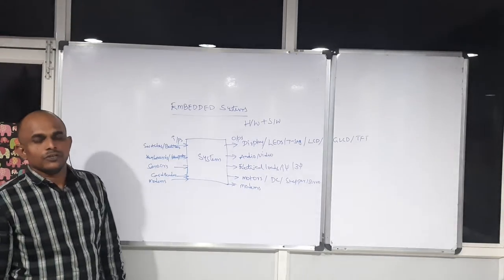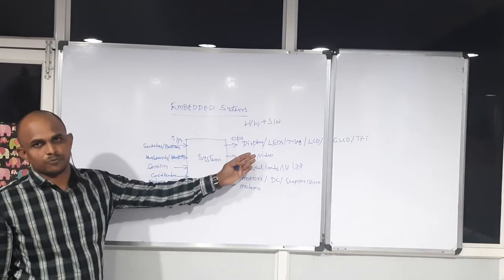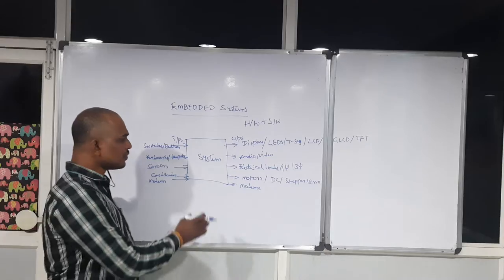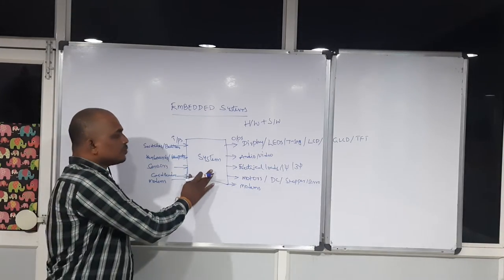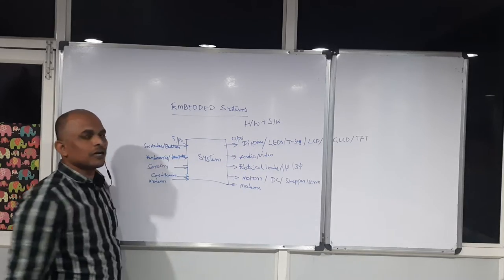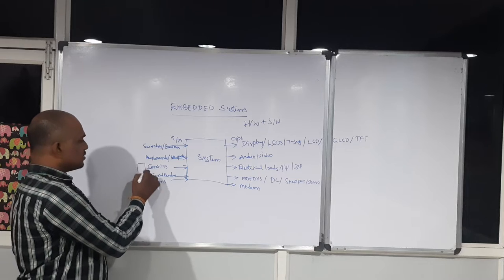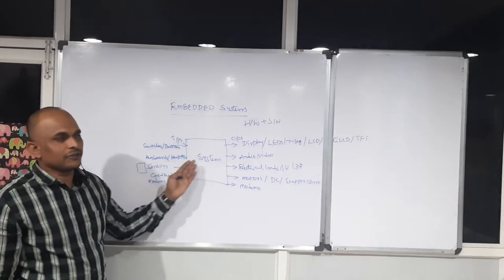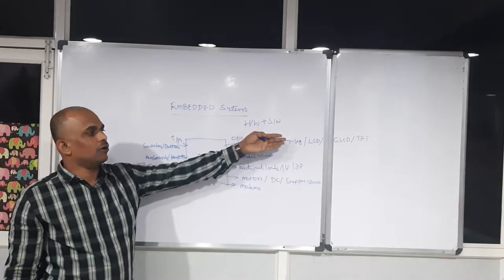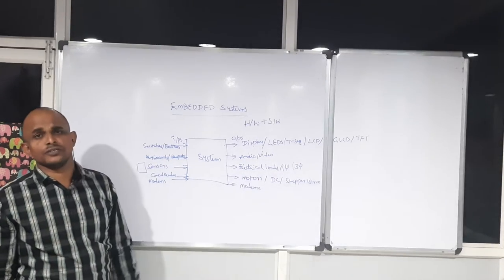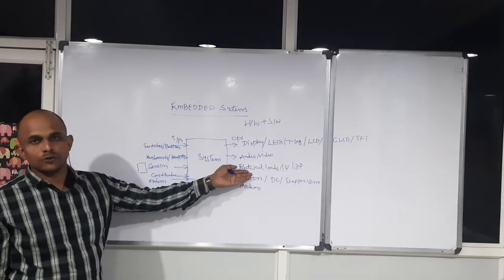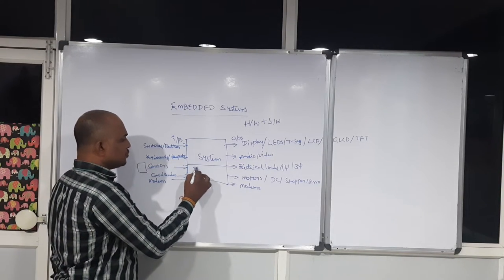So this is a simple system — you may notice it is a combination of different inputs and different outputs. Whenever you are looking to design this kind of electronic system, your system's responsibility is clear: it has to take the input from your device, whatever you have connected, and it has to control your output device. For example, based on a sensor input, you have to take a particular action on your output device — maybe controlling a motor, giving audio or video output, or showing text on screens. You need to deal with one programmable device.